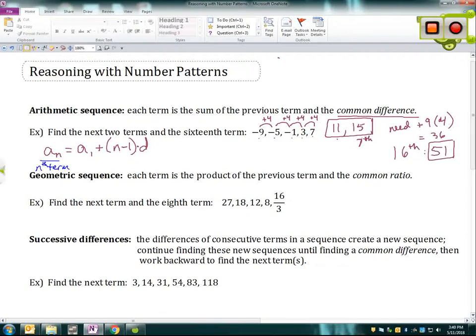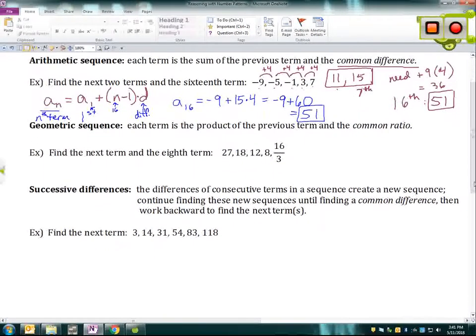So this means the nth term, whatever we're looking for. So in this case, we did the sixteenth term. And then a sub one, this index right here, that number tells us we're looking for the first term. So in that case, it's negative nine. And then n, again, what term are we looking for? This is the sixteenth. And then d is that common difference. So using this formula on this problem, I can find a sub 16 is going to equal negative nine plus n minus one, which would be 16 minus one, so that's 15 times the common difference of four. Then evaluating this, we get negative nine plus 60, which again gets us to 51. So either of those options will work. And sometimes it's just a matter of deciding what's going to be most efficient.